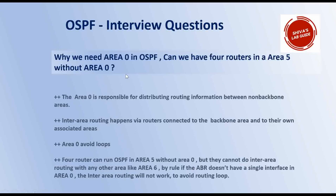A question you will definitely see in OSPF interviews is: why do we need area 0? Area 0 is responsible for distributing routing information between non-backbone areas. If you want to exchange routing information between areas, it is done through area 0 — that's why it's called the transit area. The interior routing happens via routers connected to the backbone area. The important reason for having area 0 is to avoid routing loops. If you have area 4 and area 5 and want to exchange routes between them, you need a router in area 0. Without area 0, the ABR will not forward the packet to avoid loops.